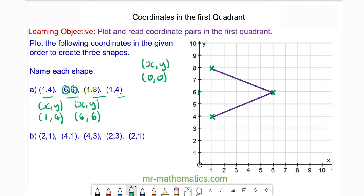And our final coordinate pair is back to (1,4), which we know is here. And because it's an isosceles triangle, we're going to mark the equal lengths with a dash.